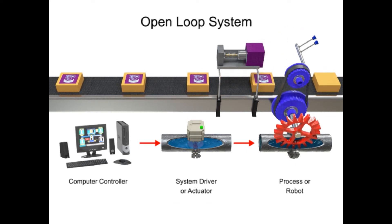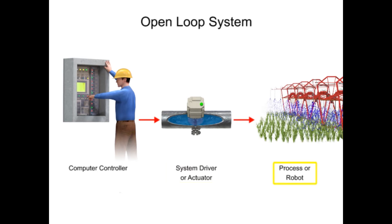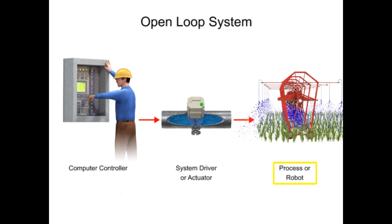A simple example of an open-loop system is an industrial sprinkler system. In this example, the programmer updates the computer controller, which will turn the sprinkler on at a designated time. When the computer sends the signal, the water valve will turn on. When the valve turns on, water flows to the sprinkler and drives a motor that allows the sprinkler to simultaneously move along the field and water the crop.